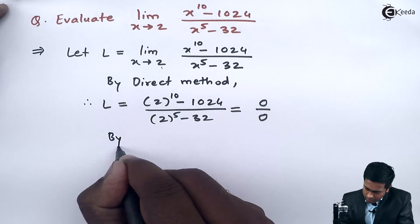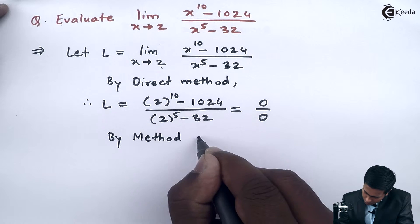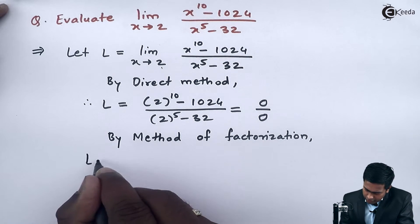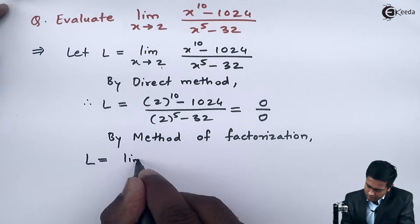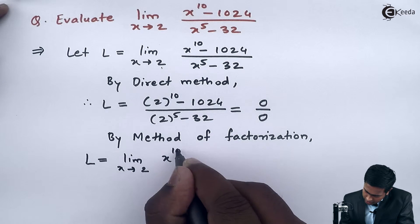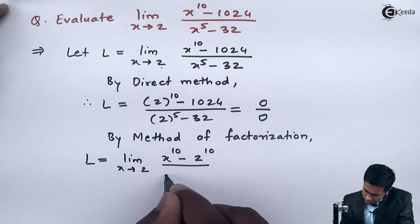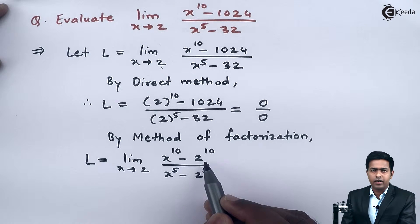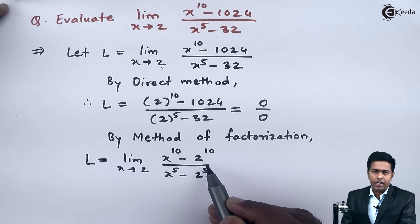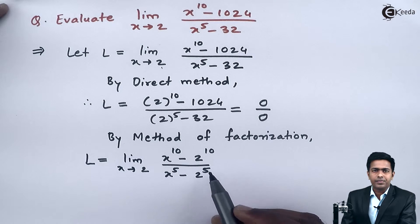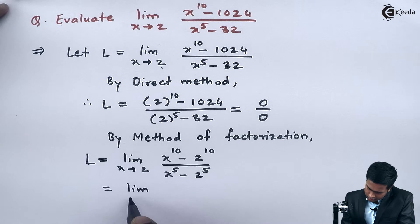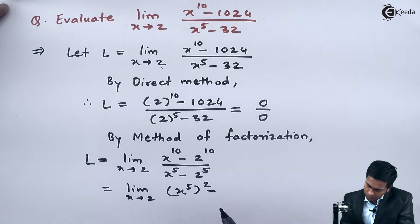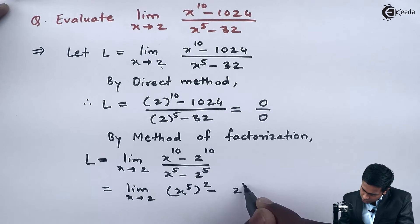By the method of factorization, we write L as limit x tends to 2 of x raised to 10 minus 2 raised to 10, upon x raised to 5 minus 2 raised to 5. To find the factors of the numerator and cancel with the denominator, I will bring the numerator in terms of the denominator. To do that, I will make x raised to 10 as x raised to 5 whole squared, and 2 raised to 10 as 2 raised to 5 whole squared.